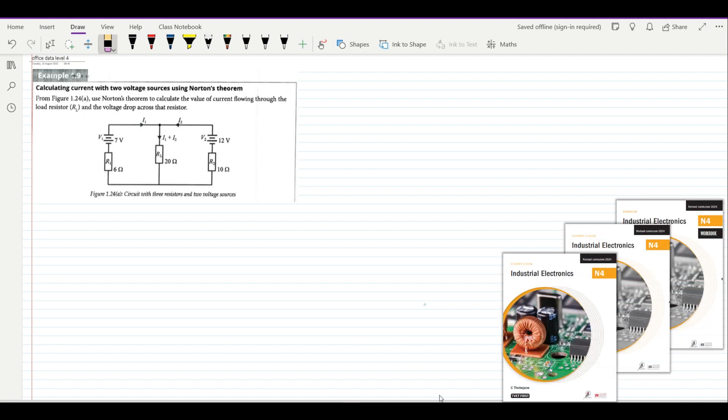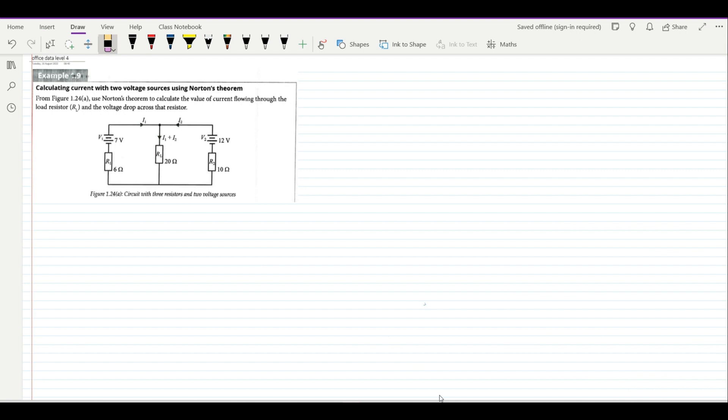We first used superposition's theorem and then we used Thevenin's theorem. So in this case we'll be using Norton's theorem. Our example comes from example 1.9 from the Tivet first book by Macmillan and Troop publishers.